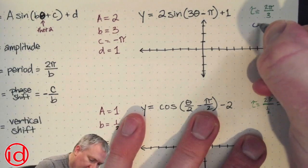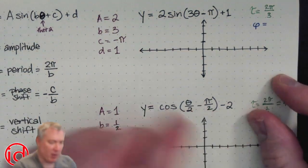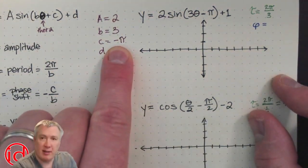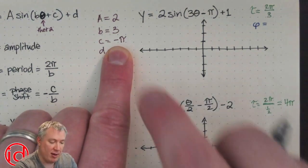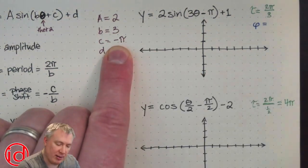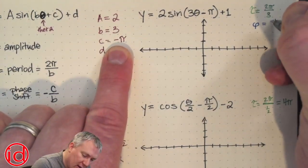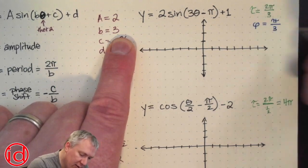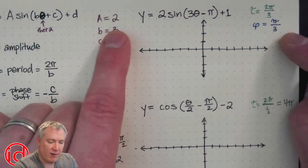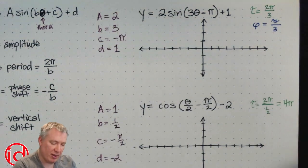And then phase shift is negative c over b. So here I look at c, c is negative π. So if I want negative c over b, then the opposite of negative π is positive π. And then divided by 3, which is b. So the opposite of c divided by b. That's what phase shift is.